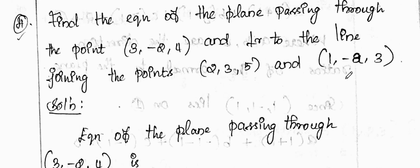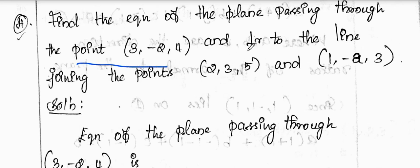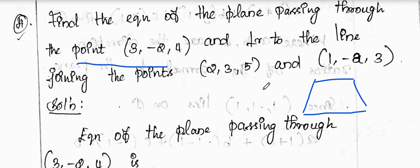For the equation of the plane, you will have a point in the plane and a line perpendicular to it. The point in the plane is (3, -2, 4).